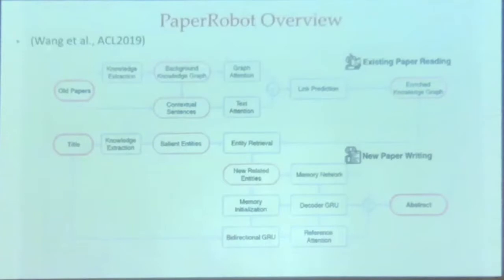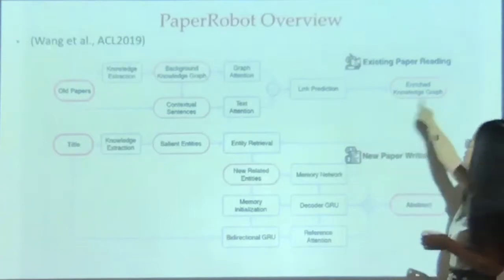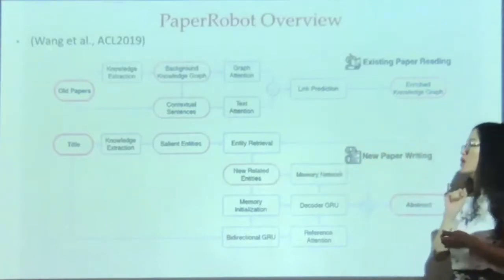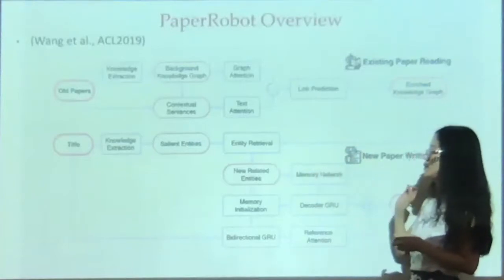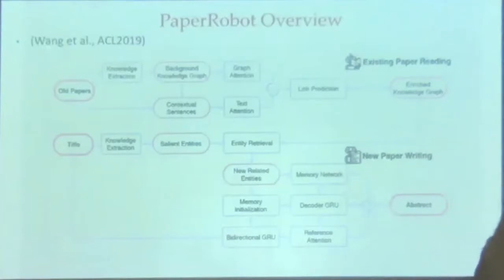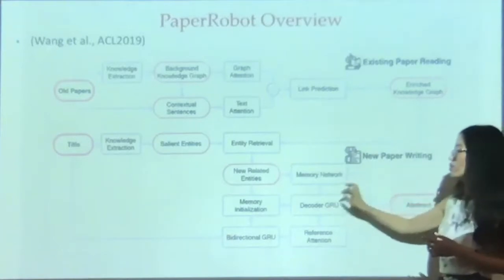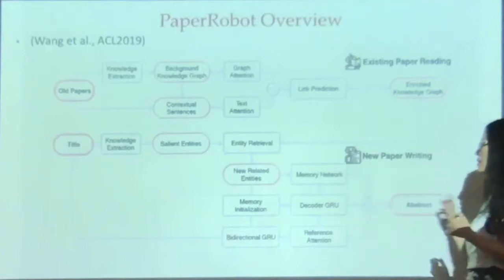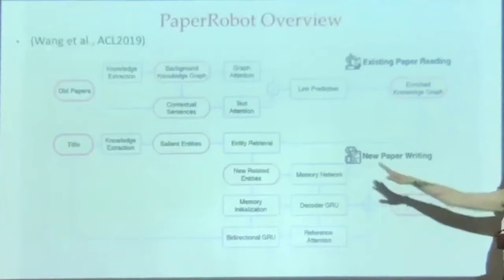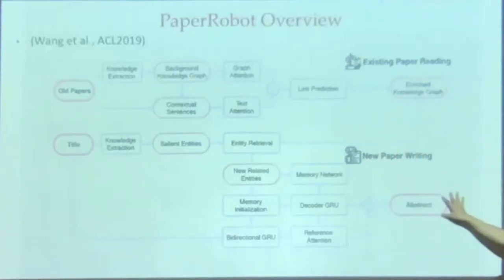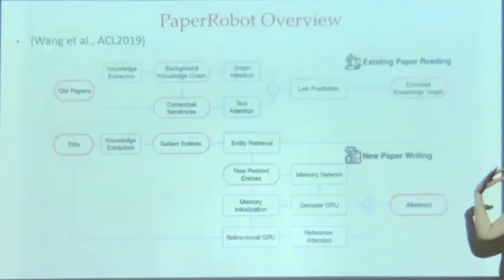For the writing part, we need a human-provided title as input, then go to check the knowledge graph to see what entities are related to entities in the title, and feed that as input into a memory network. The memory network takes three things as input: one is the language model trained from existing papers — we try to learn how to write a paper; second is the entities in the title; and third is the entities predicted from the knowledge graph module. A GRU assigns different weights to the three inputs and generates the abstract. You can use abstract as input to generate future work, then use future work as input to generate a new title.